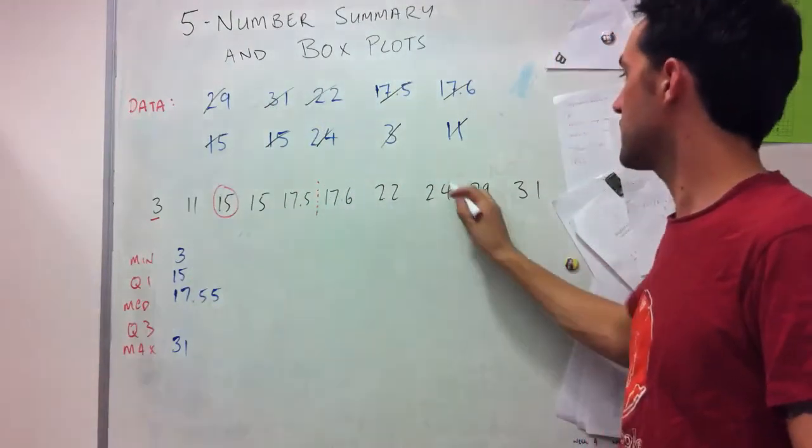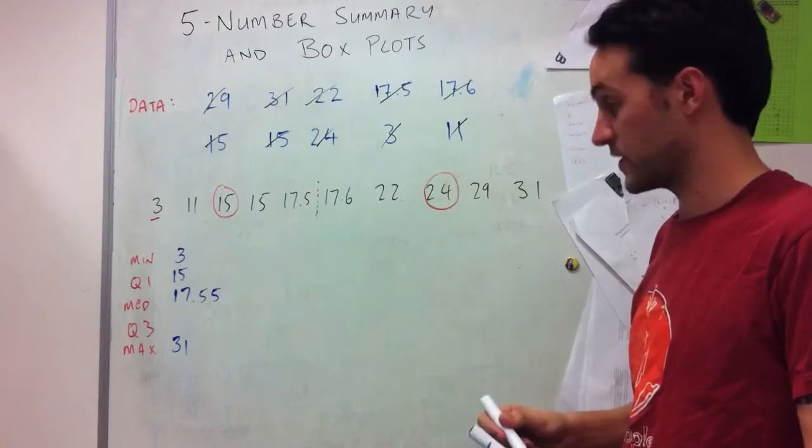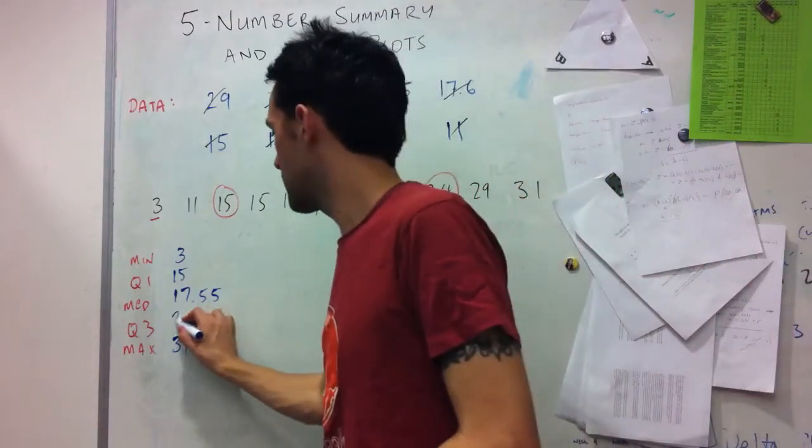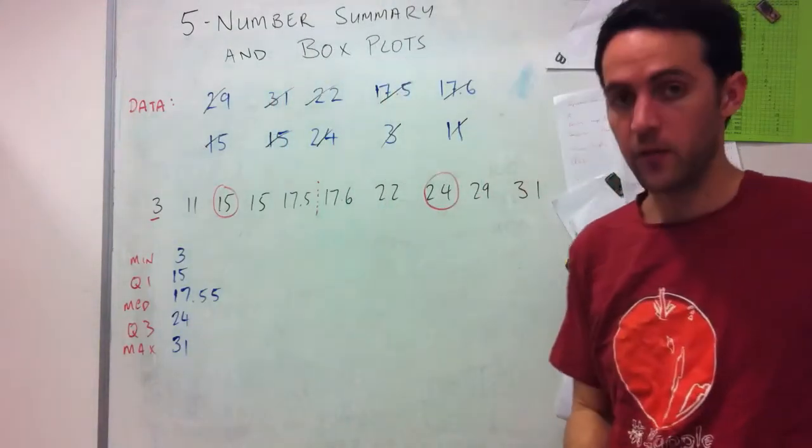And then on this side, the middle data is, middle datum, is 24. So this is my 5 number summary.